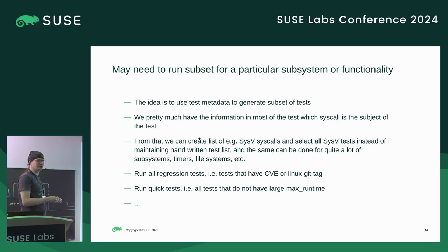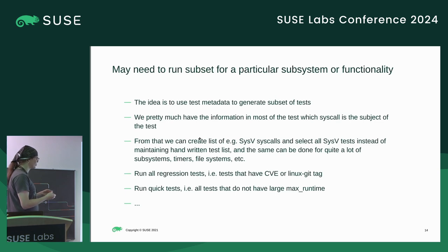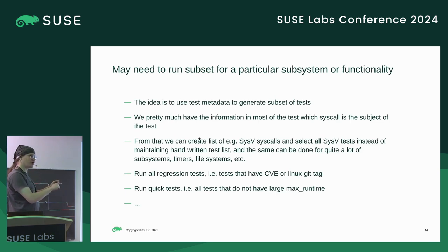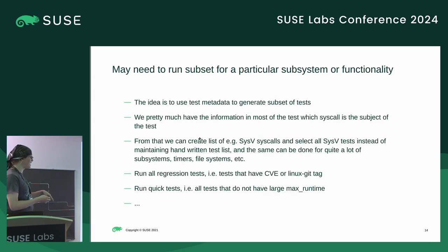Going further, you can identify a kernel subsystem, select a group of syscalls or functionality to test based on that, and from that generate a list of test cases. There could even be a small expression language for querying the metadata. For instance, to run all regression test cases — which are tagged with a CVE or Linux git tag pointing to the commit that fixed the regression — you just say 'run everything that has a linux-git-tag'. To run only quick test cases, you filter out everything with a large max runtime.